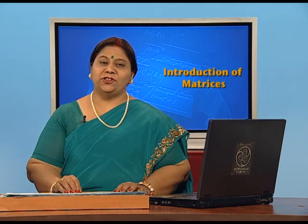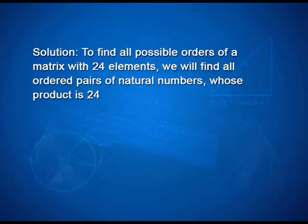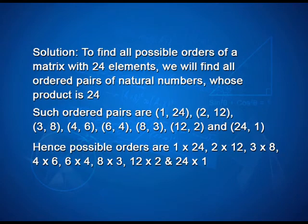Let us look into the solutions of the assignment problems given to you in the previous session. To find all possible orders of a matrix with 24 elements, we will find all ordered pairs of natural numbers whose product is 24. Such ordered pairs are 1 comma 24, 2 comma 12, 3 comma 8, 4 comma 6, 6 comma 4, 8 comma 3, 12 comma 2 and 24 comma 1.